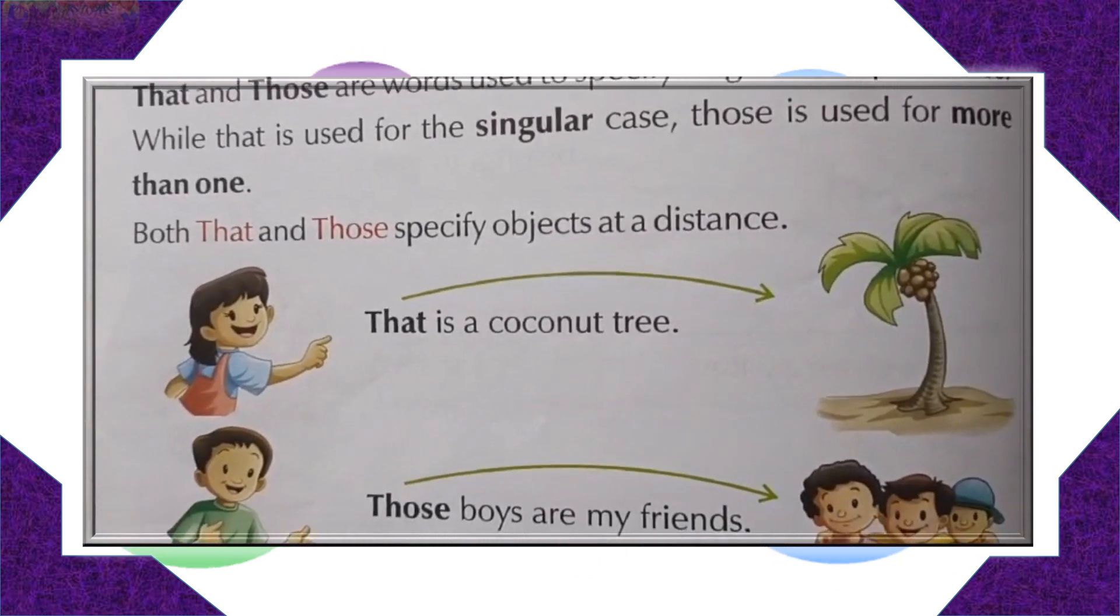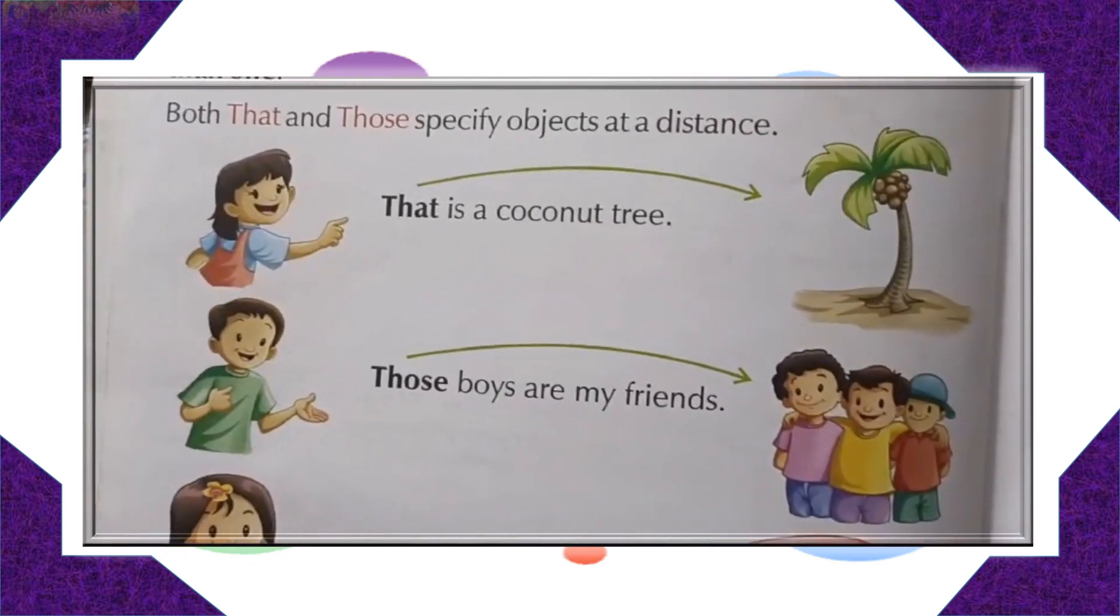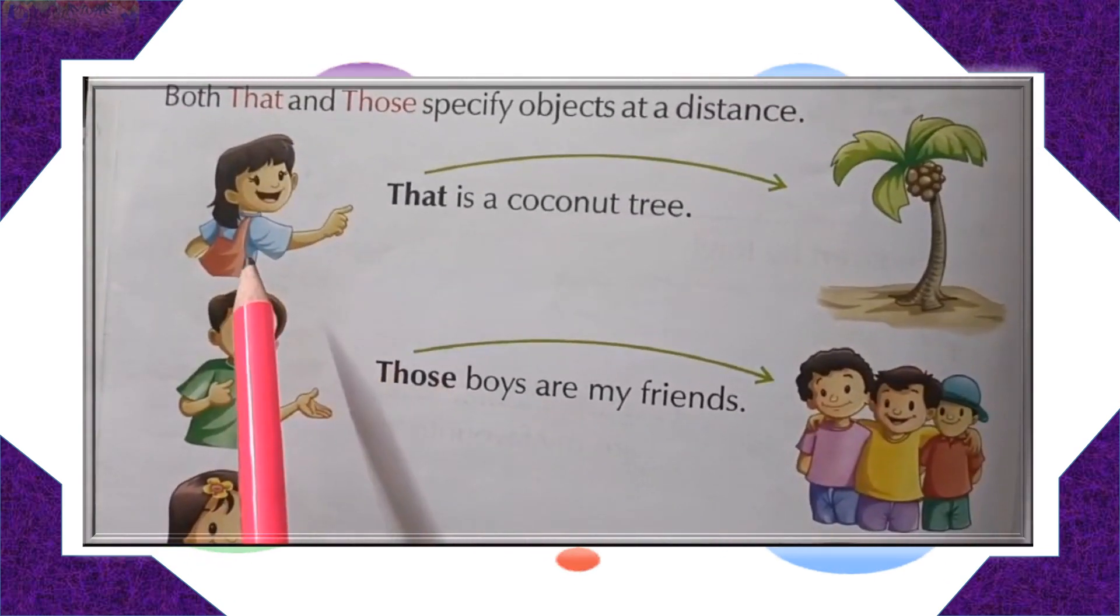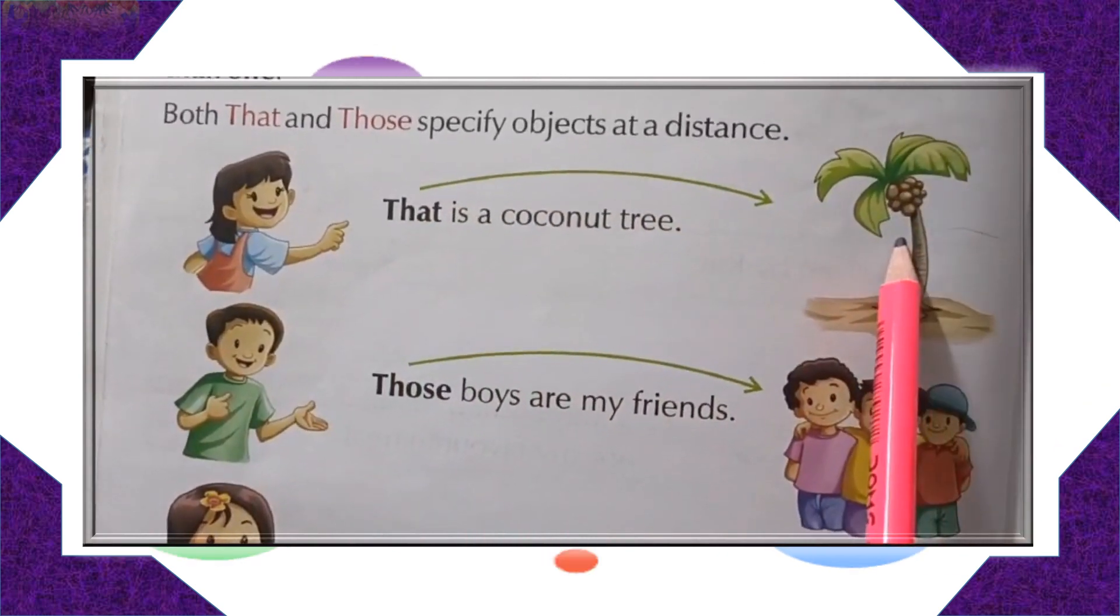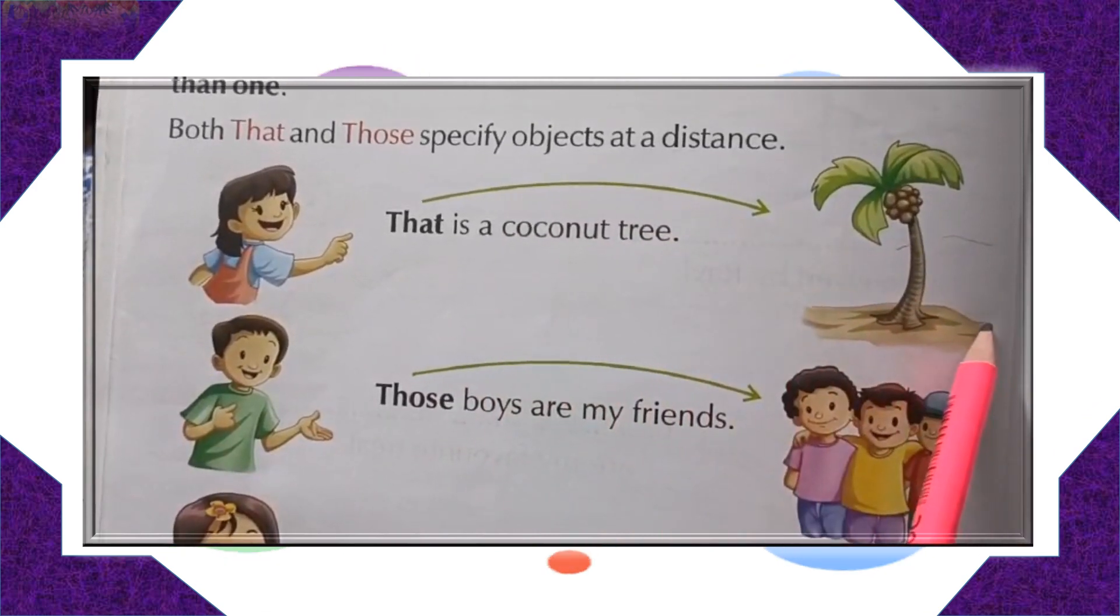Let's see the examples. These are the beautiful examples given down. This girl is saying, that is a coconut tree. The thing which is far away.